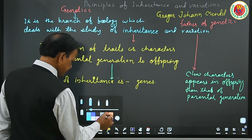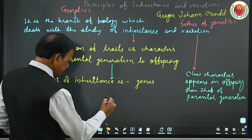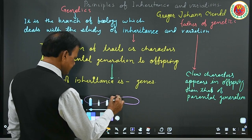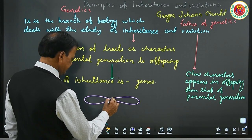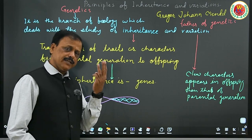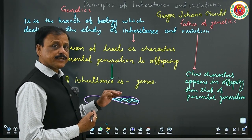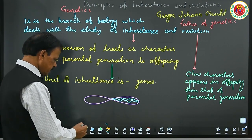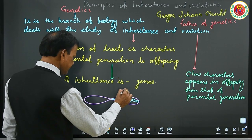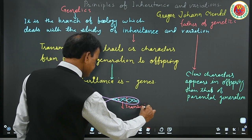Now we have to study how these characters are being transferred from parental generation to offspring. The unit of inheritance is very important — that unit of inheritance is known as genes. Now, where are the genes located? The genes are located on chromosomes. This is one chromosome. The genes are present as a sequence of nitrogenous bases — three nitrogenous base sequences code for one amino acid. These genes undergo expression and regulation through the process of transcription and translation. The genes undergo transcription, producing messenger RNA.